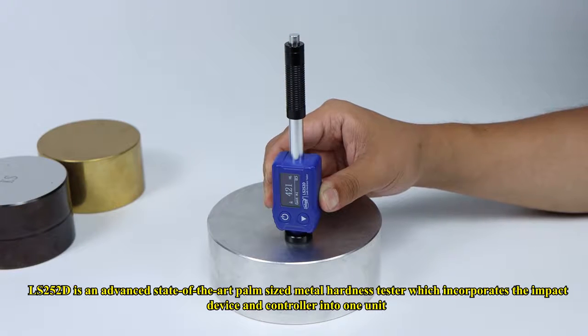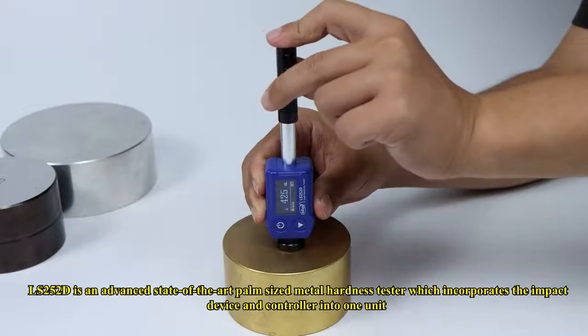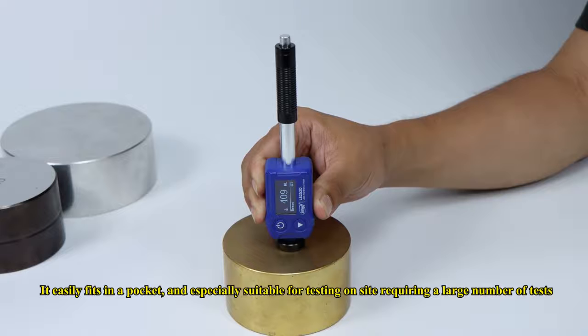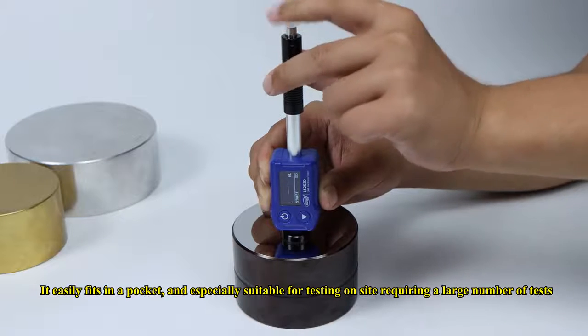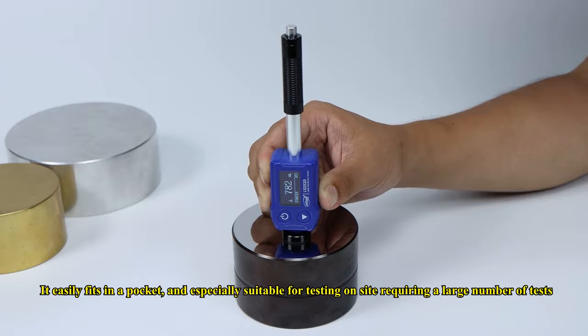The LS252D is an advanced state-of-the-art palm-sized metal hardness tester, which incorporates the impact device and controller into one unit. It easily fits in a pocket and is especially suitable for on-site testing requiring a large number of tests.